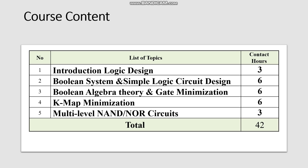In module two, we will discuss the Boolean system and simple logic circuits. As any measurement requires a number system to represent it, we will discuss different number systems: the decimal, binary, octal, and hexadecimal number systems. We will then cover how the binary number system — the fundamental system for digital logic design — is converted into electronic circuits and mathematics. We will discuss AND gate, OR gate, NAND gate, XOR gate, and many other gates.